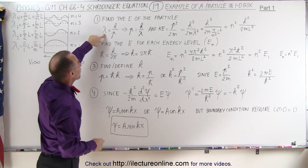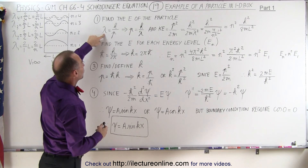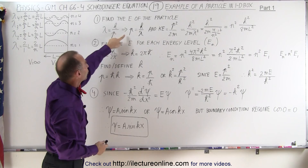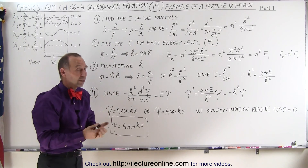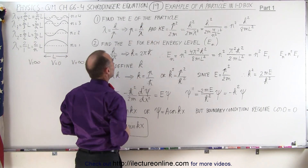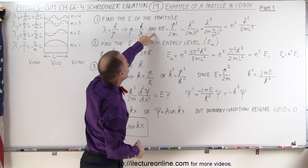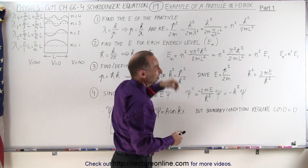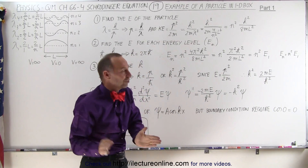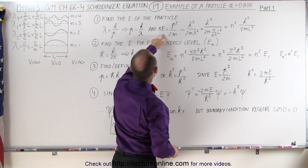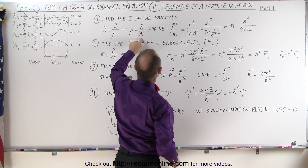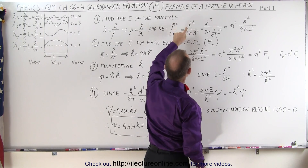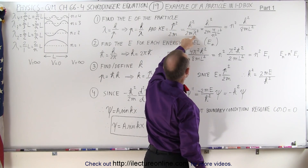Starting with the de Broglie wave equation, where lambda of a particle equals h divided by the momentum p, we can solve for momentum: p equals h divided by lambda. The kinetic energy is the momentum squared divided by twice the mass — the same as one-half mv squared. Replacing p by h over lambda, the kinetic energy becomes h squared divided by 2 times the mass times lambda squared.